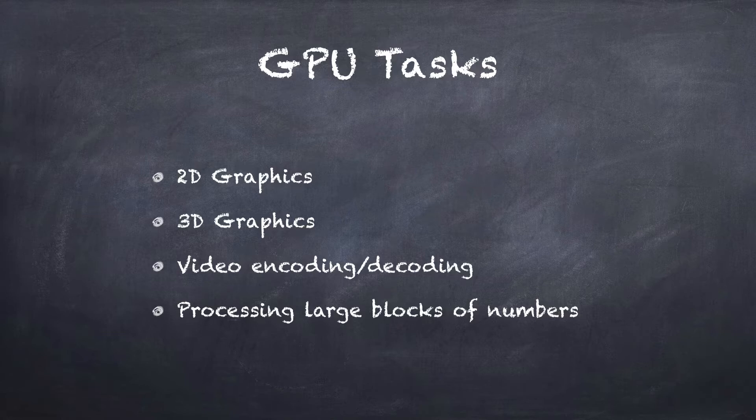The GPU processes large blocks of numbers when it does this, so sometimes it's used for other tasks involving large blocks of numbers as well. The CPU will actually task the GPU to do some of this processing even though it doesn't directly involve a display.